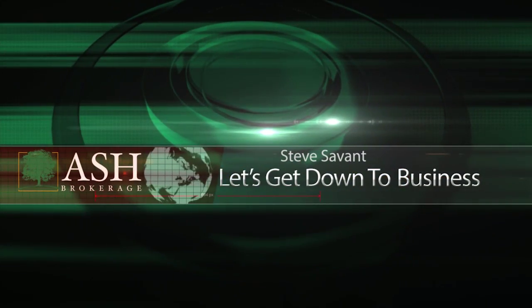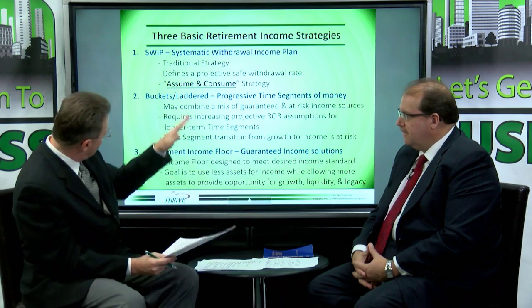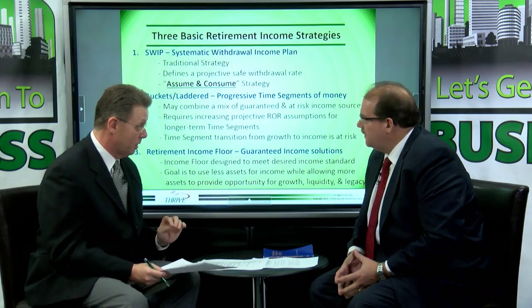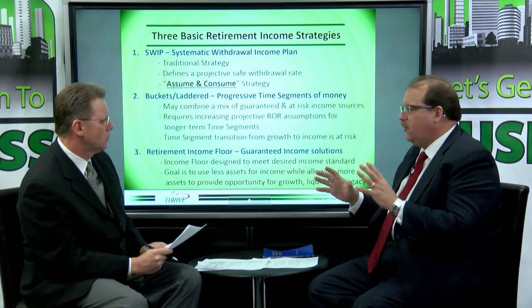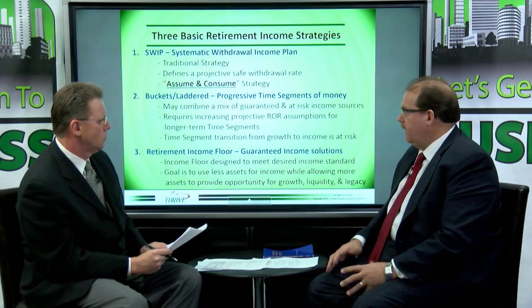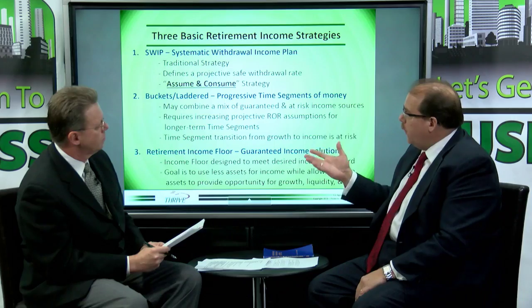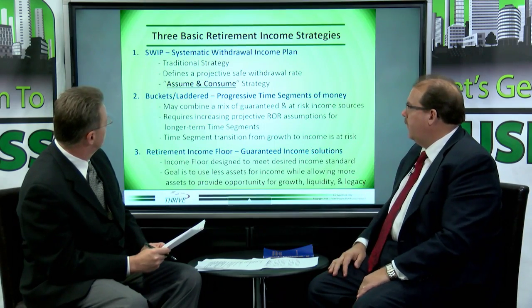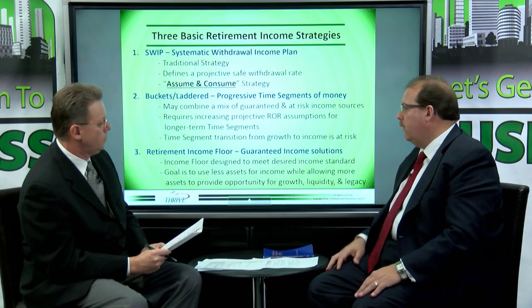We're back with Curtis Kloak. We're going to talk about your three basic income strategies. I like this because it really blocks it out. Walk us through this — and until I met you, I'd never heard of SWIP. There are lots of different strategies that are too complex for a show like this, so I'm going to narrow it down to just three basic ones. The first is the Systematic Withdrawal Income Plan — we call it SWIP. It's the traditional strategy used for years and years, modern portfolio theory, safe withdrawal rates based on history, analytics, and Monte Carlo simulations.